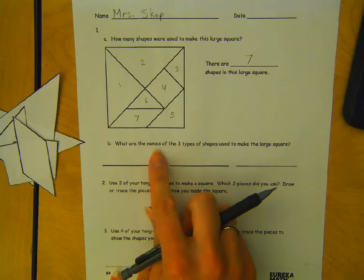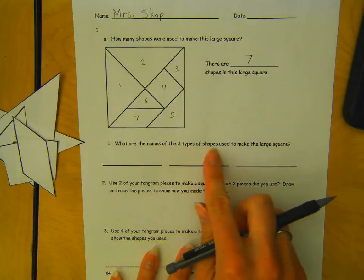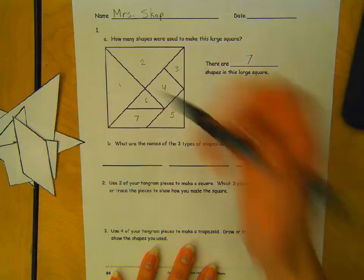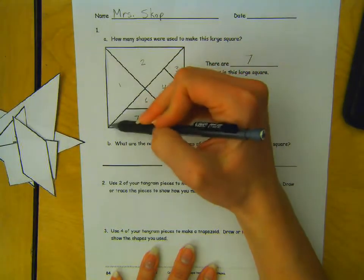What are the names of the 3 types of shapes used to make the large square? Well, what is this shape called?